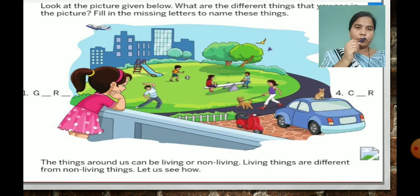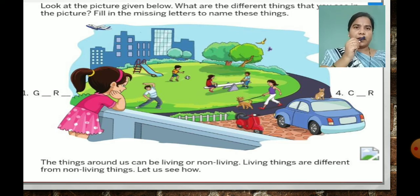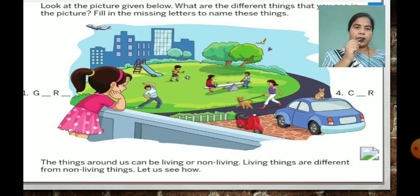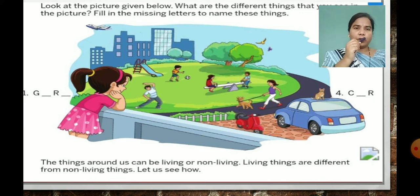If you are having your textbook, open page number 7. Look at the picture given below. What are the different things that you can see in this picture? Fill in the missing letters to name these things. Some of you have seen your photos on my WhatsApp also. In this picture there are living things and non-living things. The things around us can be living or non-living.